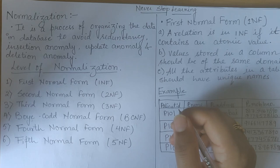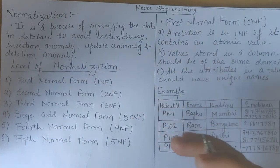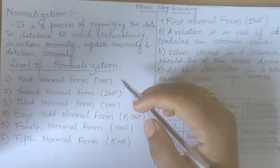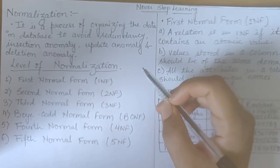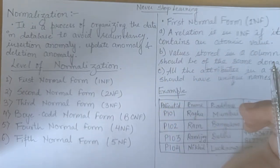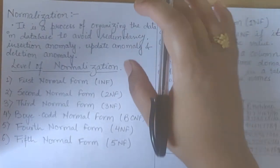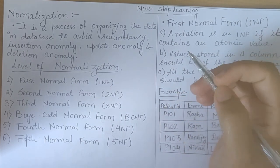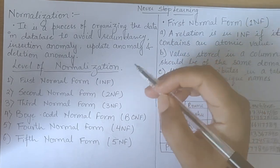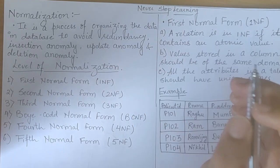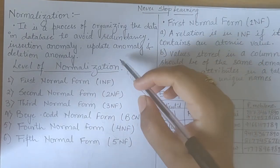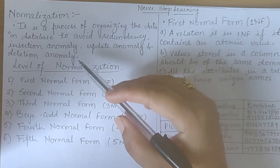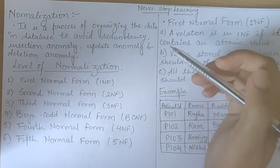Normalization is a process to remove all problems happening due to redundancy and anomalies. If a table has data redundancy and is not properly normalized, then it is difficult to handle and update the database without facing data loss. If the table is not normalized, we will surely have data loss and it will also take extra memory space. All these problems will be removed by normalizing.